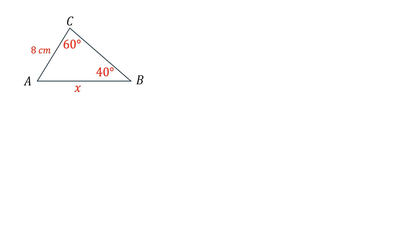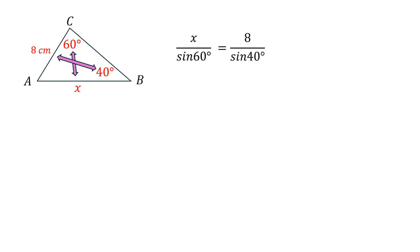Let's look at an example. We have triangle ABC with one side of 8 centimeters, an unknown side x, and two given angles: 60 degrees and 40 degrees. The 60-degree angle is paired with its opposite side of 8, and we write the ratio as 8 over sine 40. Make sure the equation has only one unknown variable so it can be solved.